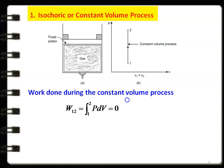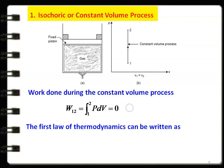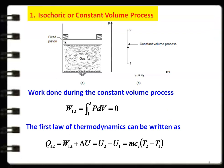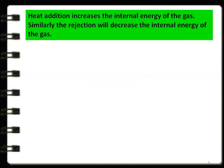For the constant volume process, work done is the integral P dV. Since there is no change in volume, dV = 0, so work done W12 = 0. From the first law of thermodynamics: Q12 = W12 + ΔU. Since W12 = 0, Q12 = U2 − U1 = m·cv·(T2 − T1) for perfect gases. Heat addition increases the internal energy of the gas, and heat rejection decreases it.